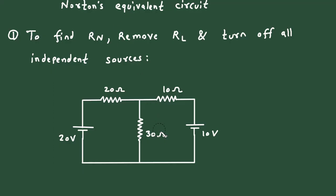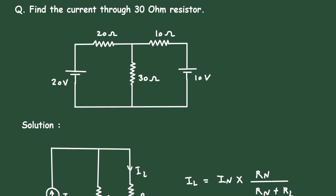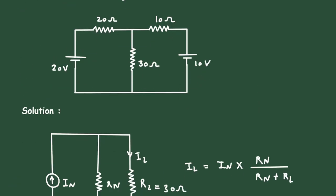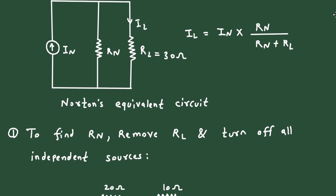Now when we remove this load resistor, we can see the load resistor value is 30 Ohm here, so Rl is equal to 30 Ohm. This is the load resistor and we have to find the current through this 30 Ohm resistor. We have the value of Rl and we have to find the values of In and Rn, so first we are finding Rn.